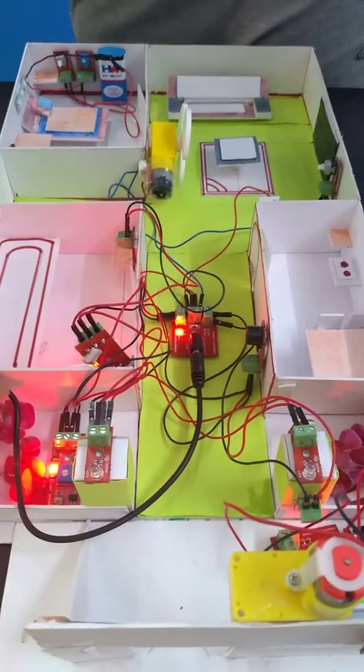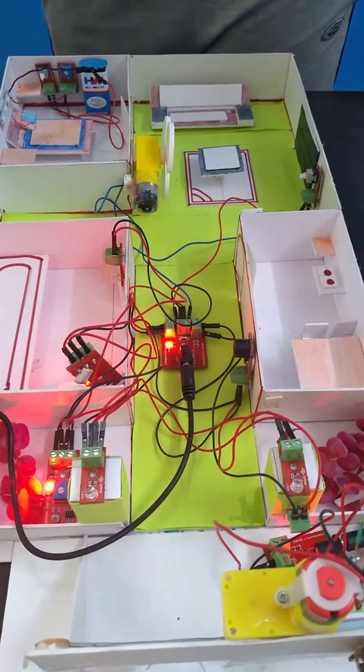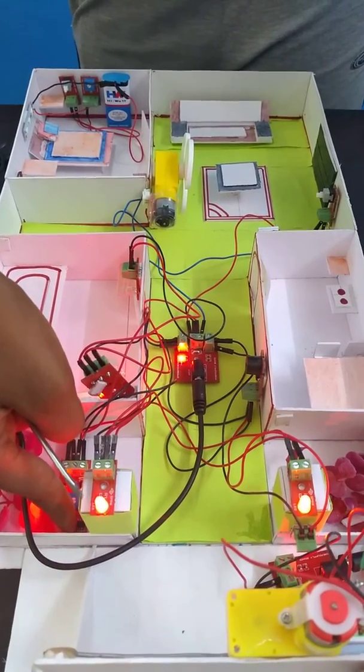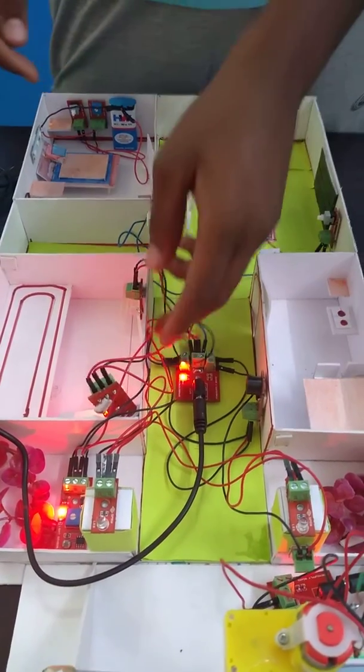This is an IR sensor. The IR sensor will sense the light. When there is no light, the lights will glow automatically. It is a presence lighting.